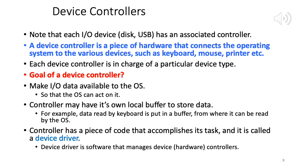For example, if a program needs to read input from the keyboard, the keyboard's device controller ensures the keyboard data is available to the OS. It will have its own local buffer — as keystrokes are typed they are recorded in order (first come, first served) and stored in a buffer, which the OS or application then reads. So the controller may have its own local buffer to store data — data read by the keyboard is put in a buffer from where it can be read by the OS.